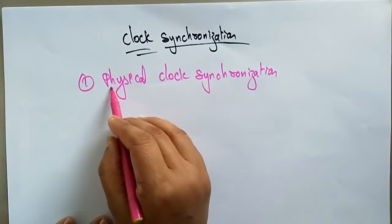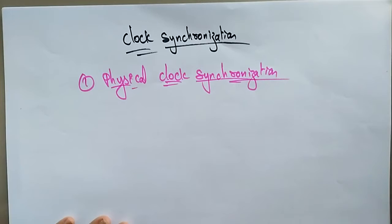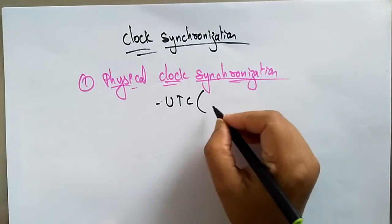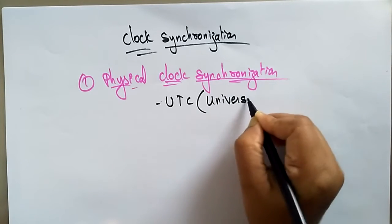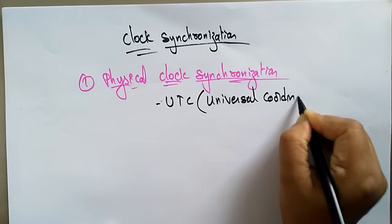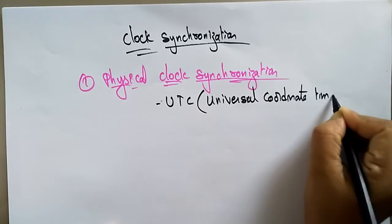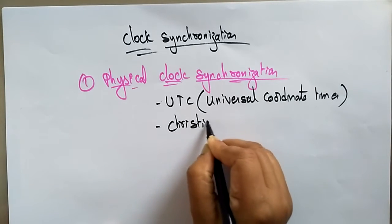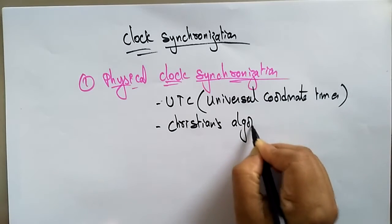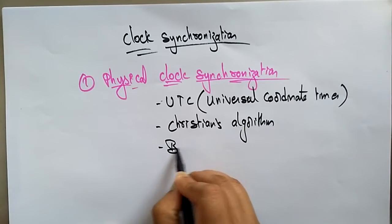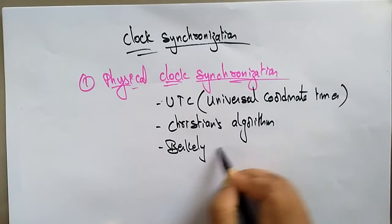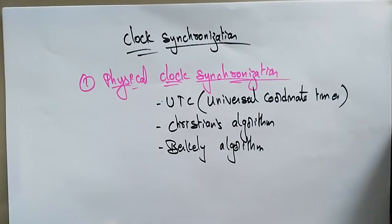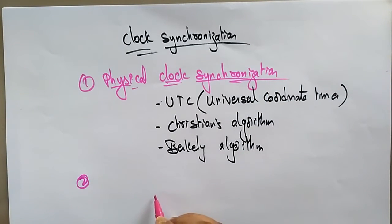The different techniques used for physical clock synchronization are: UTC, that is Universal Coordinate Time, Christian's algorithm, and Berkeley algorithm. So these are all the different physical clock synchronization techniques.